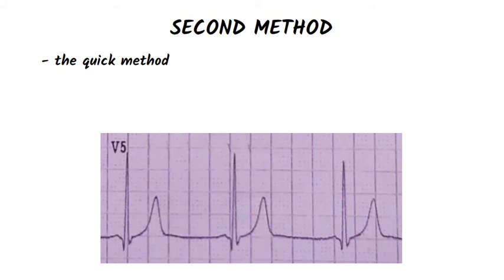We look for an R wave that is placed on a thick line, which is the edge of a large square, like this one for example. The next thick lines are numbered as follows: 300, 150, 100, 75, 60, 50.